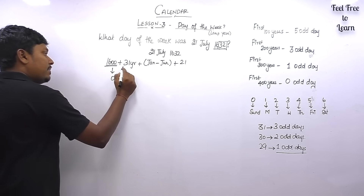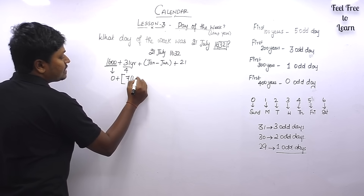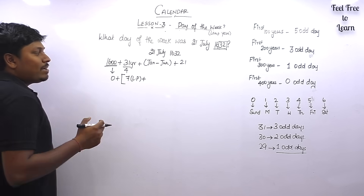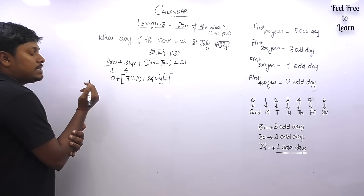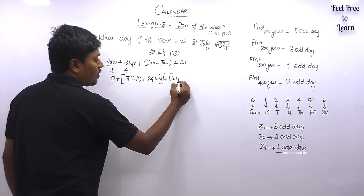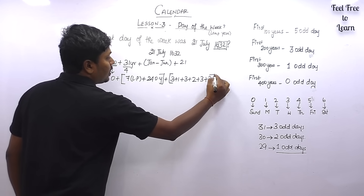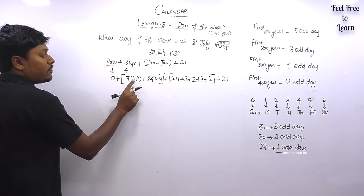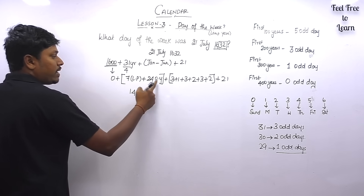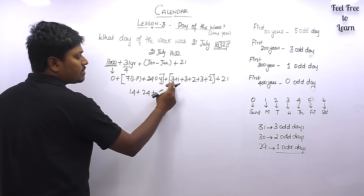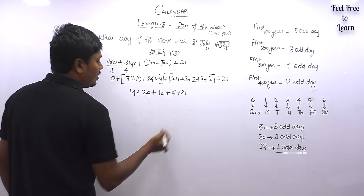For 31 years, divide by 4: 7 × 4 = 28, giving 7 leap years and 24 ordinary years. January: 3 odd days. February (leap year): 1 odd day. March: 3 odd days. April: 2 odd days. May: 3 odd days. June: 2 odd days. Then we target 21st July. Every leap year gives 2 odd days: 7 × 2 = 14. Every ordinary year gives 1 odd day: 24 × 1 = 24. Adding all: 14 + 24 + 3 + 1 + 3 + 2 + 3 + 2 + 21 = 73, plus the previous subtotals giving 76.